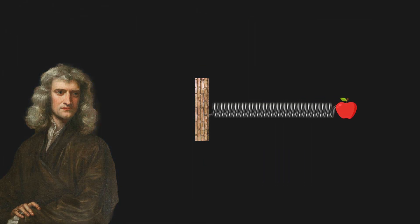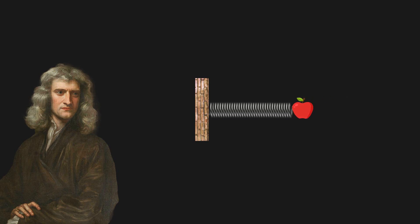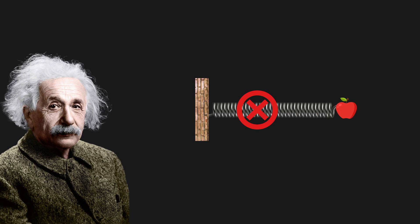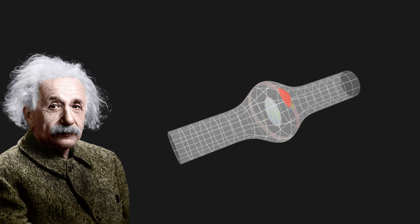Newton would have explained this by saying that gravity acts like a spring, pulling the object back and causing it to oscillate. Einstein, on the other hand, would argue that there's no spring or force involved. The object simply follows the curved spacetime surface. If the surface is curved, it naturally bends the path of anything moving on it.